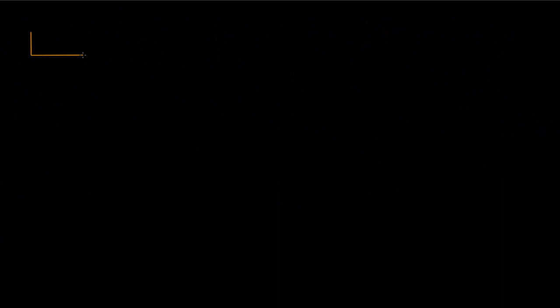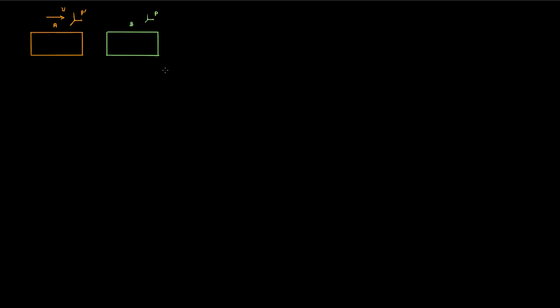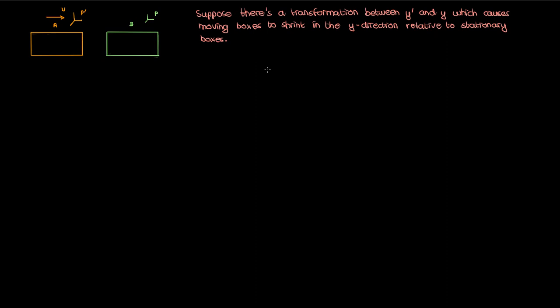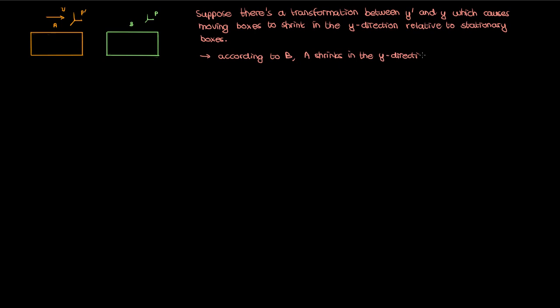If you don't believe that this is true, let me go on the side to help cast away your doubt. Let's take two rectangular boxes a and b of roughly the same size. Have box a move in the x direction at a velocity of v, while b remains stationary relative to the ground. The stationary box has its own stationary reference frame p, while the moving box has a reference frame p'. Let's suppose that there was some transformation between y' and y such that y' and y weren't always equal. We could assume for instance that the transformation caused the moving box to shrink in the y direction relative to the stationary box.